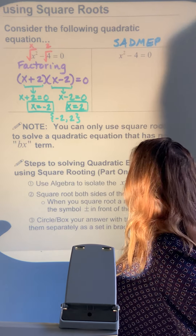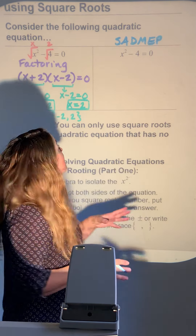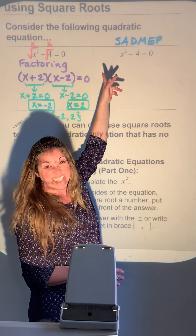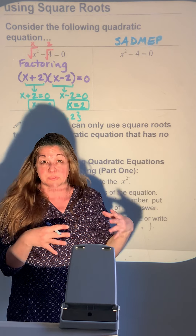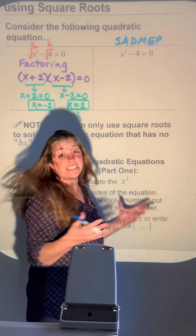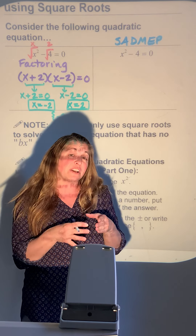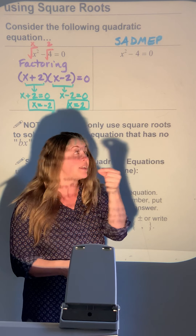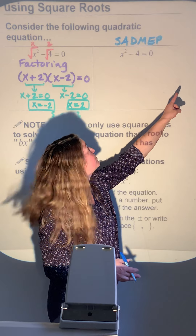Sometimes I write SADMEP above equations to remind me: when solving, always undo addition or subtraction first (the SA), then move on to any division or multiplication. Now with quadratics, we've got our variable with an exponent — that's what the E in SADMEP means.